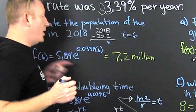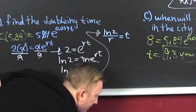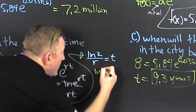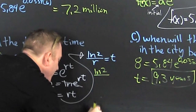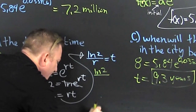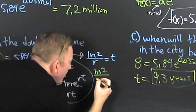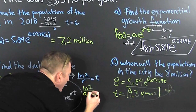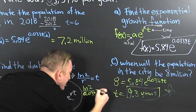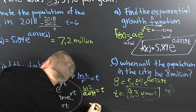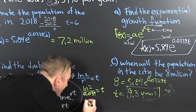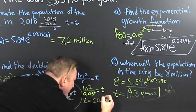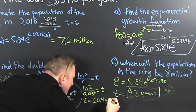So what do we do? We go and we substitute our r in there. So now we're looking at the natural log of 2 divided by 0.0339 — that's going to be t. And what does that turn out to be? Looks like t is going to be 20.4 years.